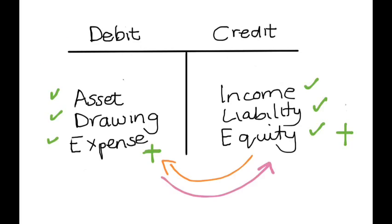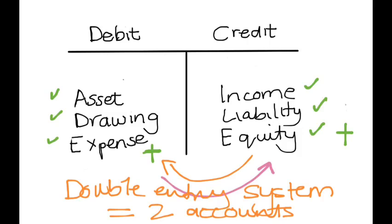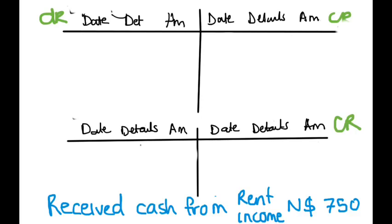This is the accounting rule — the double entry system. What the double entry system says is that every single transaction will always have two accounts — always, always, always. Let's see how that looks. For example: received cash from rent income — two accounts are involved.